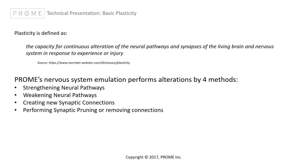Let's start by defining what we mean by plasticity. Webster defines biological plasticity as the capacity for continuous alteration of the neural pathways and synapses of the living brain and nervous system in response to experience or injury. Prohm's nervous system emulation performs nervous system alteration by four methods: strengthening neural pathways, weakening neural pathways, creating new synaptic connections, and synaptic pruning or removing connections.